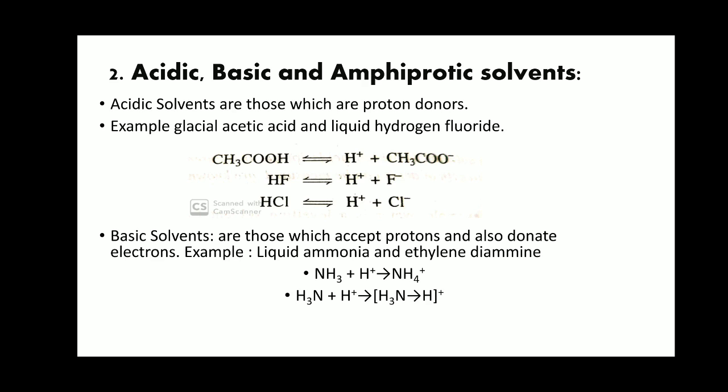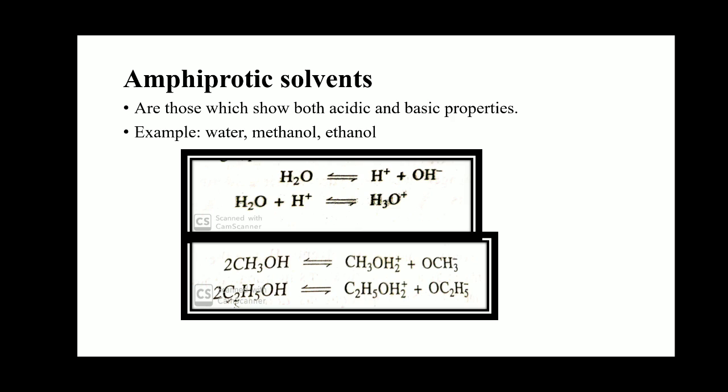In the reaction showing basic behavior, NH₃ accepts a proton: NH₃ + H⁺ forms NH₄⁺ (ammonium ion). By accepting a proton, NH₃ acts as a basic solvent. The next category is amphiprotic solvents. Amphiprotic solvents are those solvents which show both acidic and basic properties.